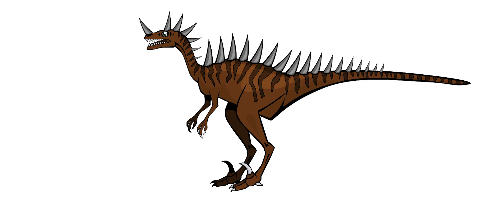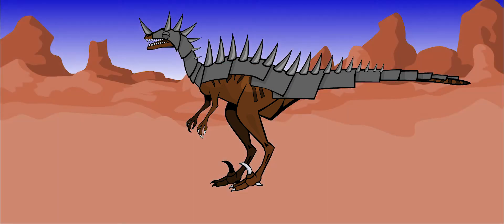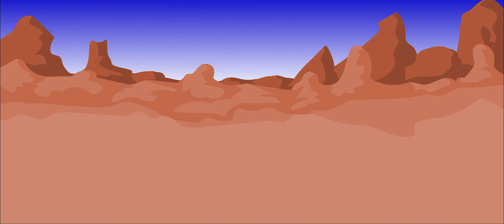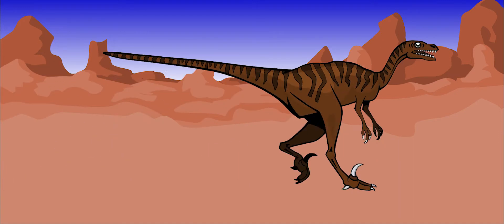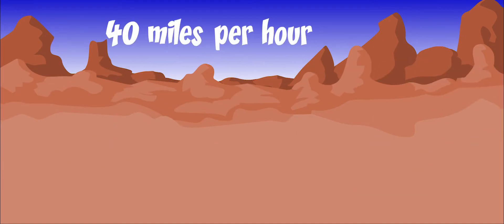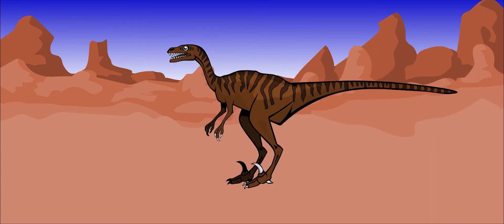It didn't have any spikes or armor to weigh it down, so it was one of the fastest dinosaurs that ever lived. It could run as fast as 40 miles an hour for a short time. It was probably also a good jumper.